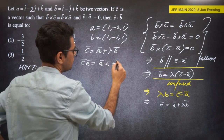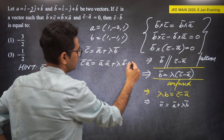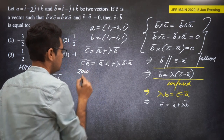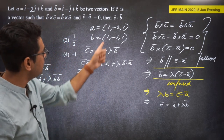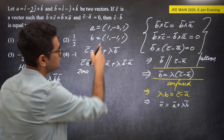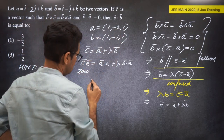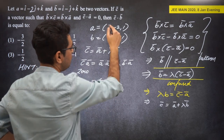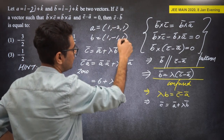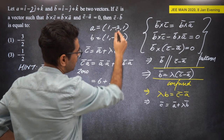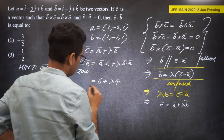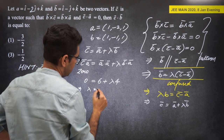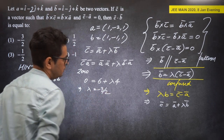Taking dot product of C = A + lambda*B with A: A·A + lambda*(B·A) = 0. B·A = 0 is given, and A·A = 1 + 4 + 1 = 6, so 6 + lambda*0 — actually we use B·A: B·A = 1 - 2 + 1 = 0, confirmed given. So lambda = -(A·A)/(B·A)... We need another condition.